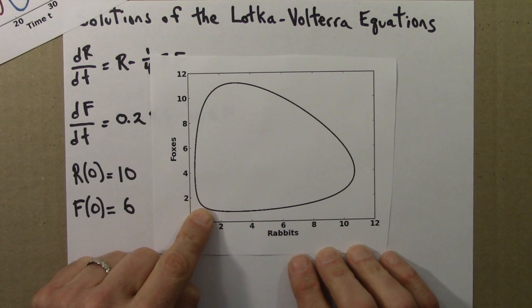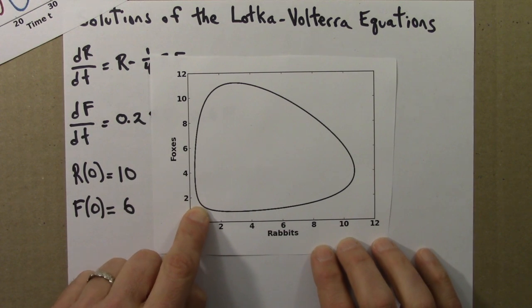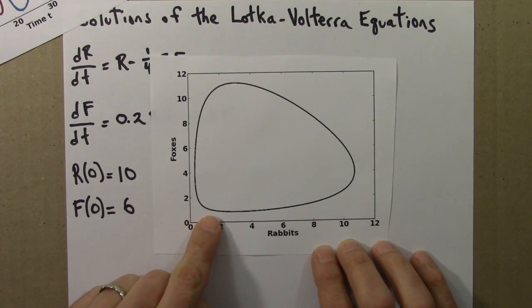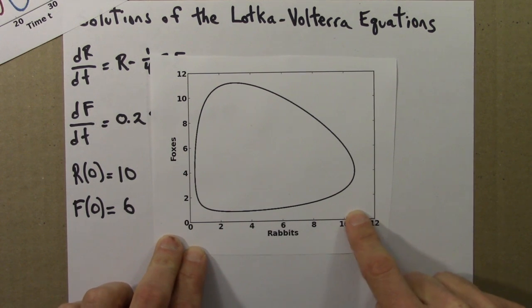We start down here. Rabbits are small, foxes are small, the populations are small. And so that's good news for the rabbits. The rabbits like it when there aren't too many foxes. So the rabbit population increases. Moving to the right on this diagram means that the rabbit populations are increasing.